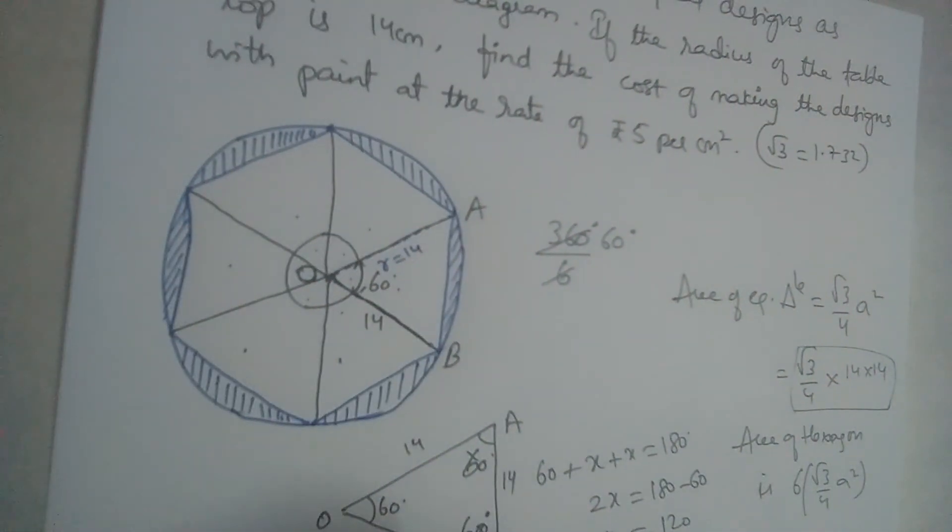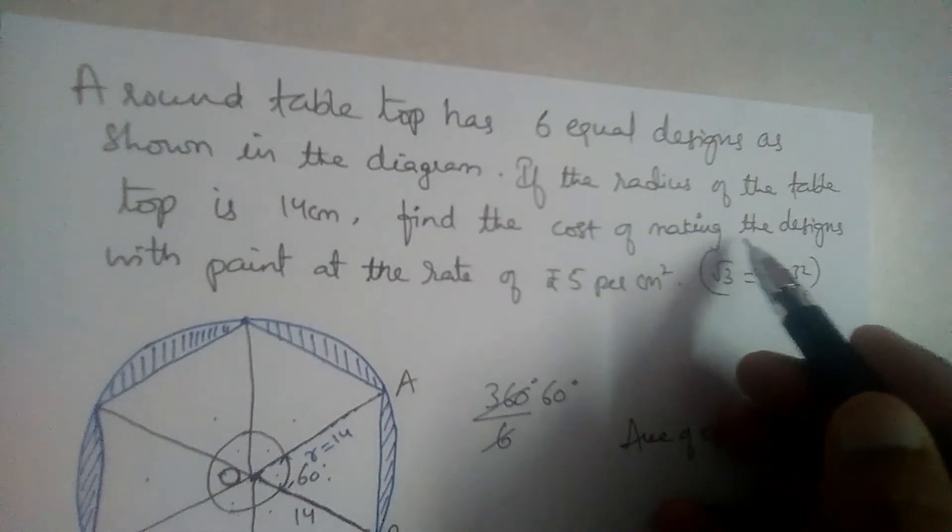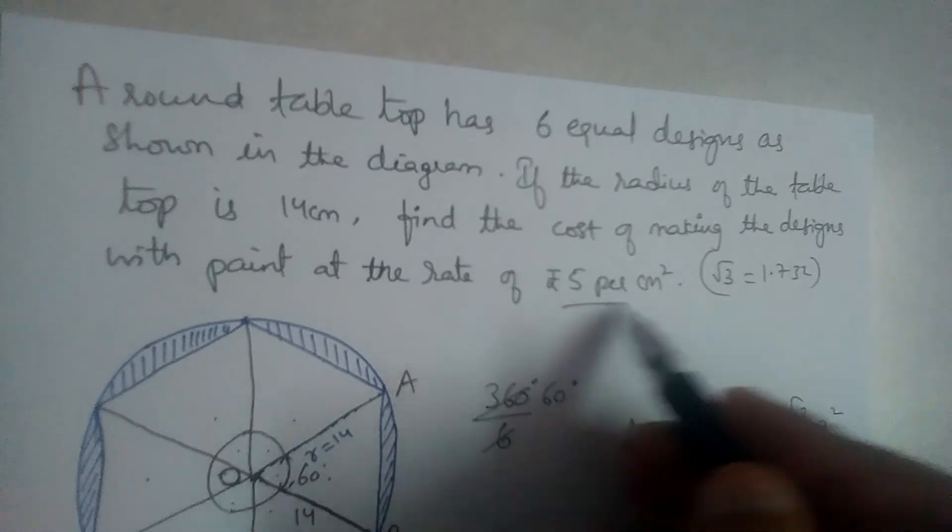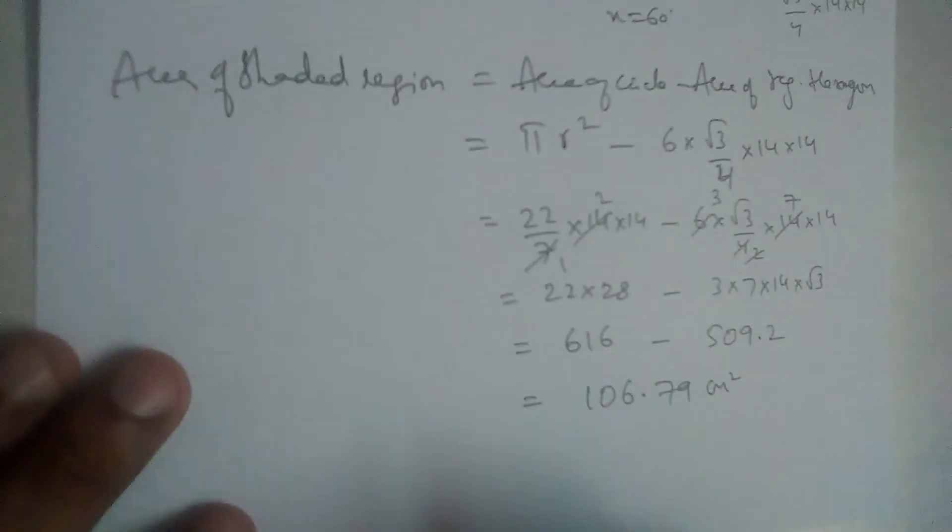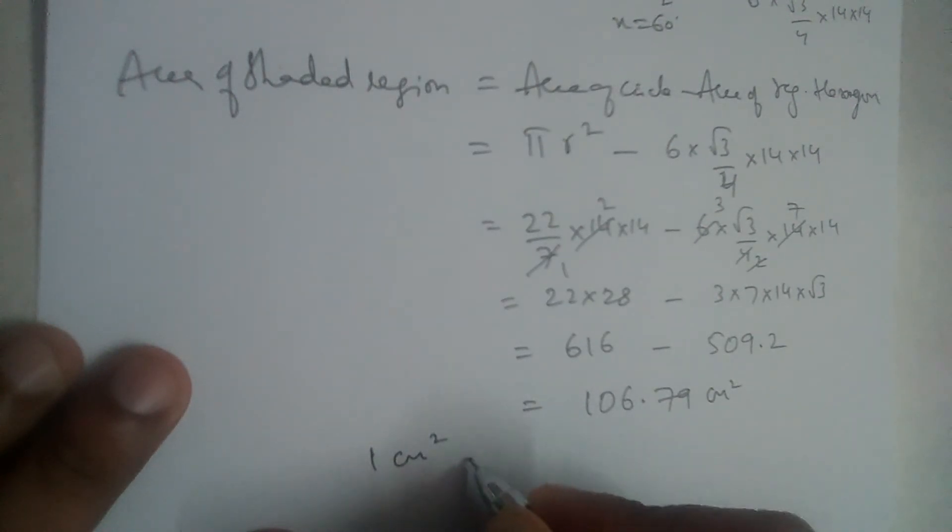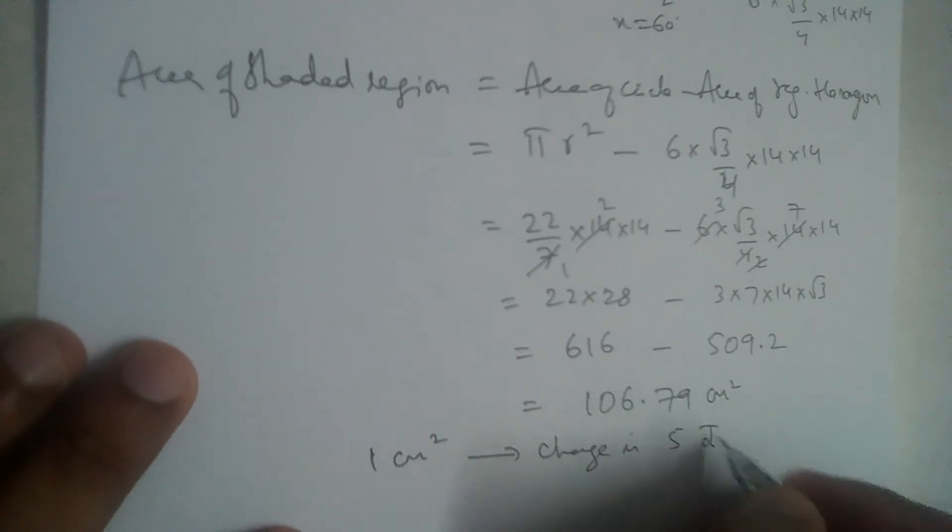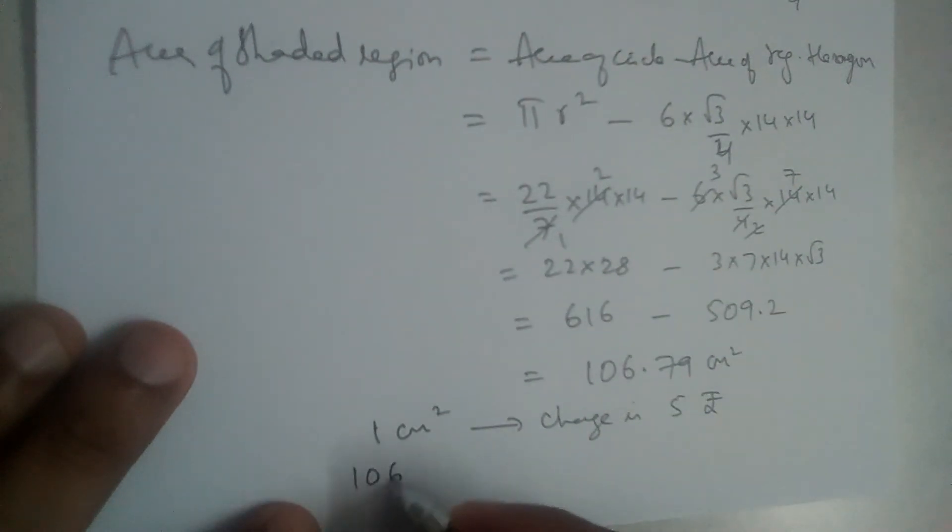Now what is the question? Find the cost of making the designs with paint at rate of 5 rupees per centimeter square. So for 1 centimeter square, the charge is 5 rupees. So for 106 centimeter square, what will be the charge?